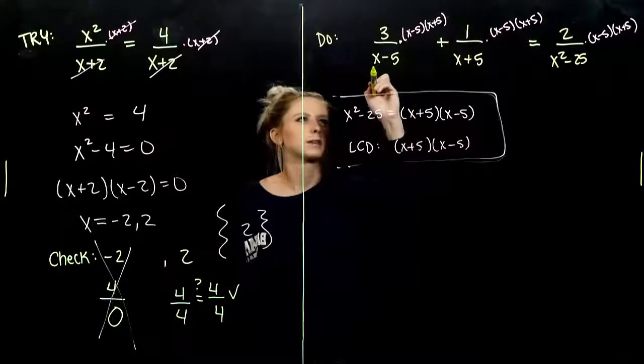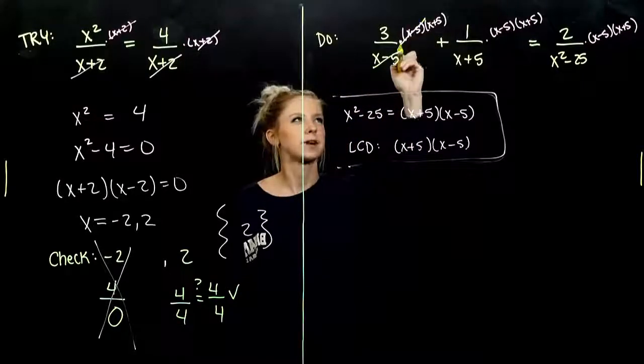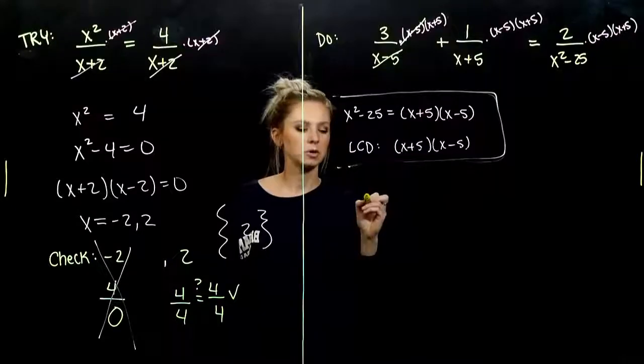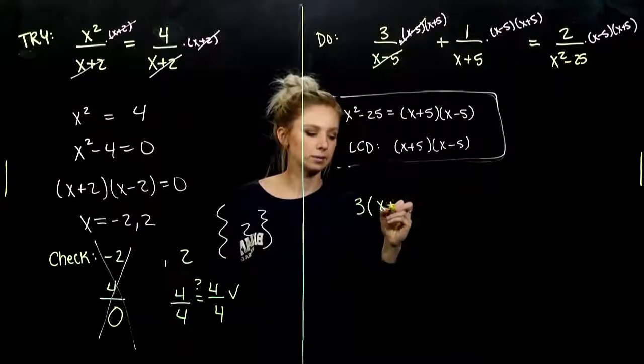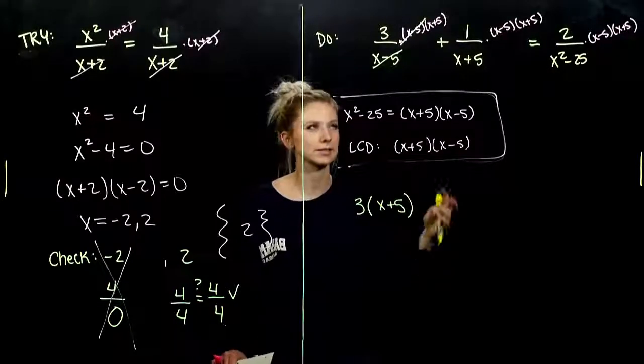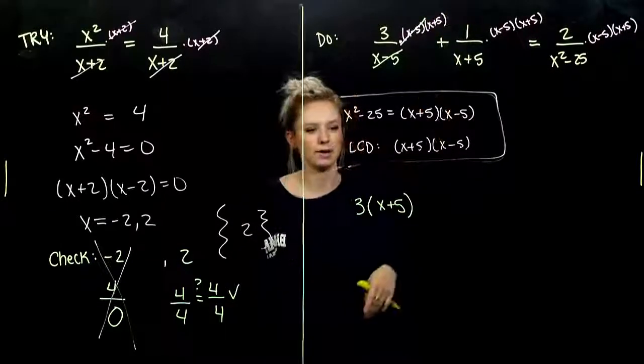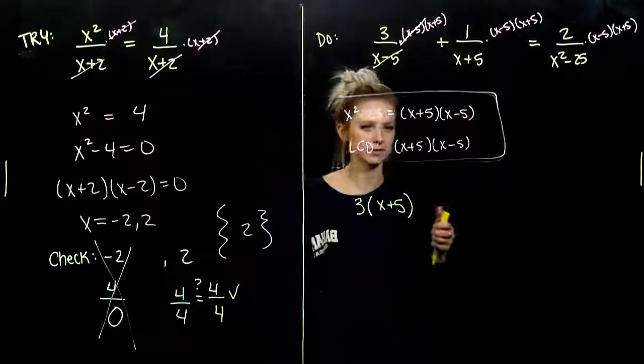So, with my first one, that entire quantity, X minus 5, will go away. And what's left? I've got 3 times X plus 5. And we need the parentheses because it's times that entire quantity. Got rid of the fractions.